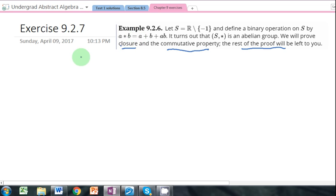So if you remember what the other properties are, you have identity, and then you have inverse, and then you have associative.